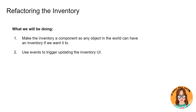What we're going to be doing to refactor our inventory is we're going to make the inventory a component so that we can put it on any game object in the world. This will allow us to give the player an inventory, then give a chest an inventory, and then give the shop owner an inventory. And that's just going to make it really easy for us to do lots of different things, like picking up an item. Anything that has an inventory, we might want to allow to pick up an item.